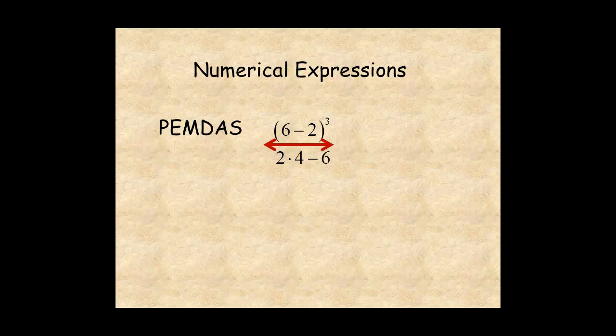In the numerator, 6 minus 2 is 4. In the denominator, 2 times 4 is 8. Then, 4 to the power of 3 is 64, and 8 minus 6 is 2. Finally, 64 divided by 2 is 32.